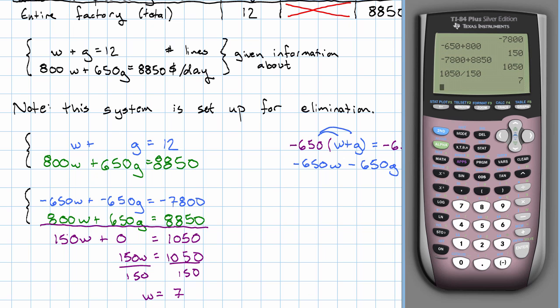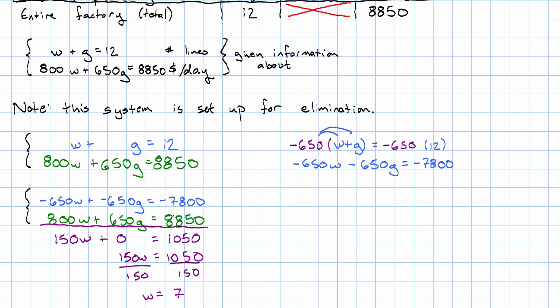Now we go back and find G, probably easiest to do in the first equation. So W is 7 plus G equals 12, subtract 7 on both sides, and we get G equals 5.